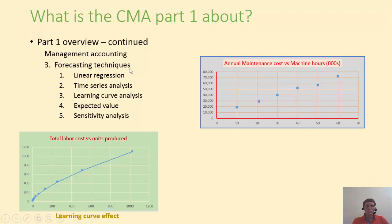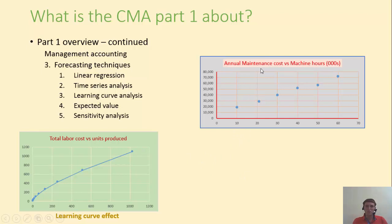Before we go into budgeting, we need to discuss forecasting, because we need estimates for our future costs and revenues. We will learn techniques borrowed mainly from statistics, including linear regression, time series analysis, learning curve analysis, expected value, and sensitivity analysis. Using such methods, we'll be able to estimate our costs — for example, annual maintenance costs based on cost drivers such as machine hours. We might also use regression to estimate our future sales revenue based on marketing expenses.